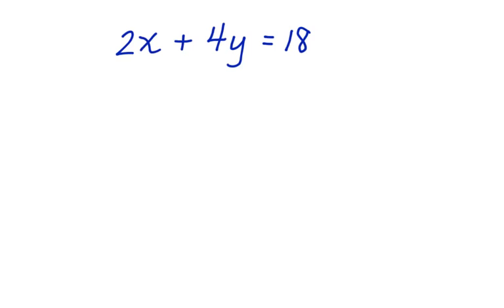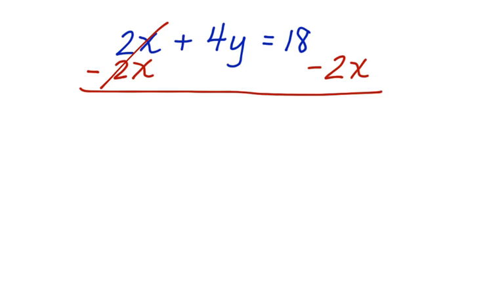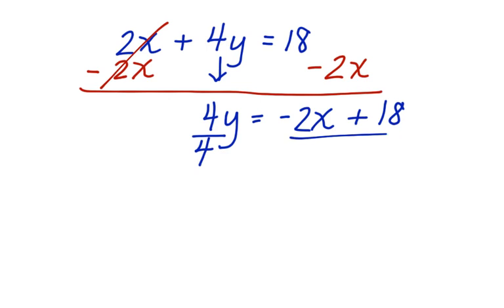The first thing we're going to do is we're going to move this 2x. We're going to use the inverse and subtract 2x from one side and 2x from the other. These cancel. Bring down the 4y equals negative 2x plus 18. Now we're going to divide both sides by 4 so that we can get y alone. y is equal to negative 2x plus 18 divided by 4.